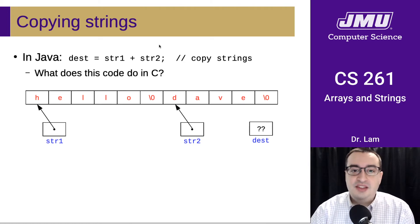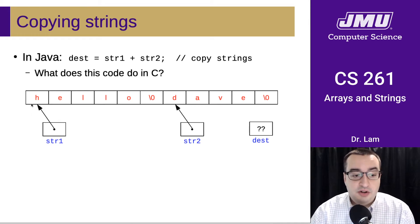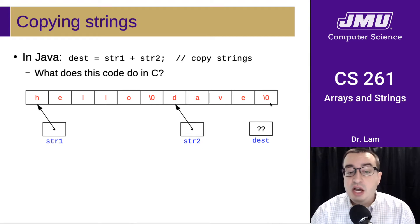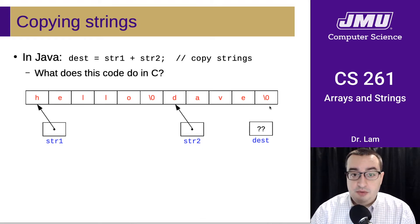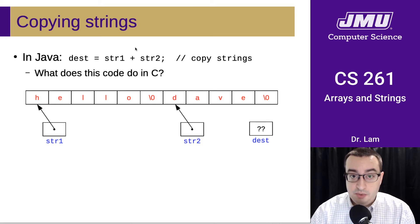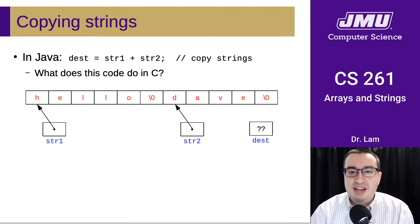It's worth thinking about what this code would do in C. If we had str1, which is a pointer to a null-terminated string in memory, and str2, which is a pointer to another null-terminated string in memory, what does this line of code do? Maybe it's worth pausing the video for a second and thinking about what this does.